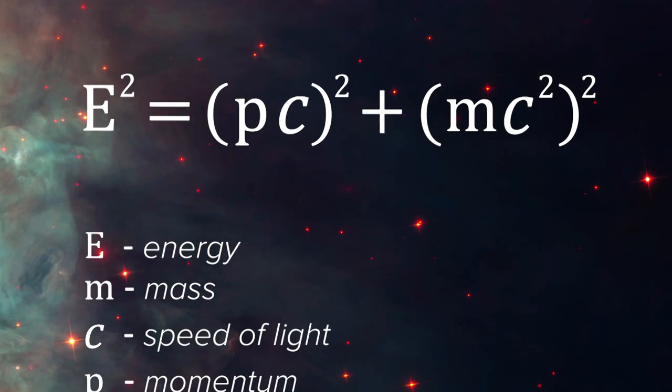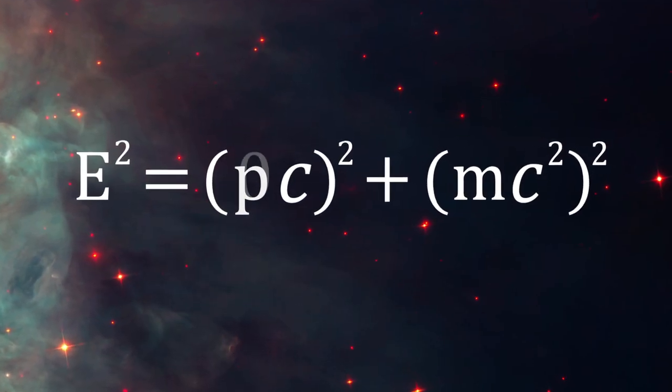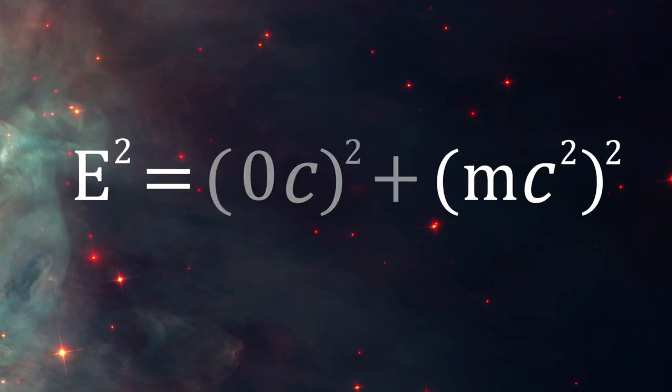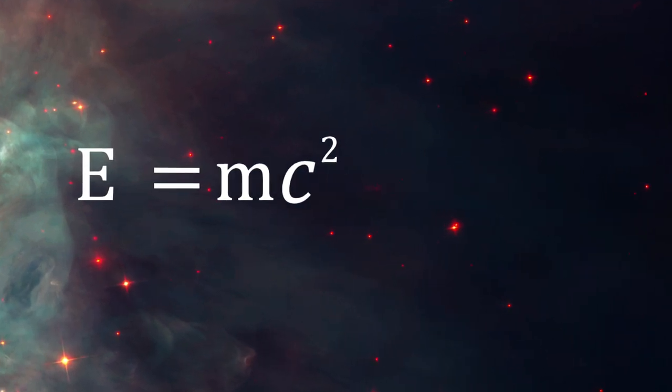Let's see what happens in the case of a particle not moving, which means setting the momentum to zero. Voila, you get the familiar equation E equals MC squared.